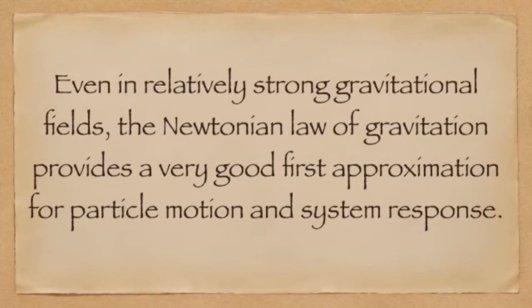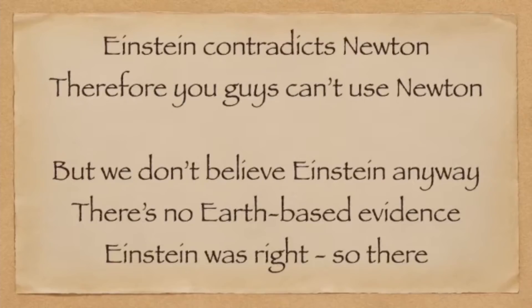Flerf claims to the contrary are directly contradicted by the scientific literature and may be dismissed as simple lies. The Flerfer argument goes: Einstein contradicts Newton, therefore we cannot use Newtonian theory — but Flerfs then turn around and say that Einstein was wrong and there's no Earth-based evidence he was right. Obviously these two logical propositions are directly contradictory. It cannot be the case that Einstein's formulation is true and invalidates Newtonian theory and is simultaneously false and doesn't need to be considered.